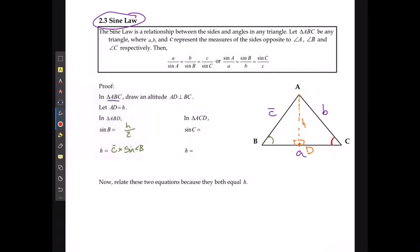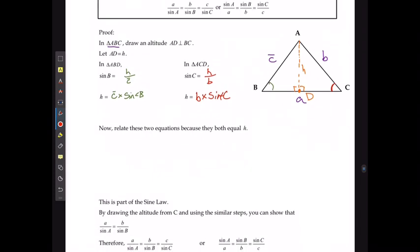For the triangle on the other side, I can say that sine of C is going to be H over side length B, which means that H in this case would be B multiplied by sine of angle C. Now since these two equations are both equal to H, that means that C times sine of B has to be equal to B times sine of C.